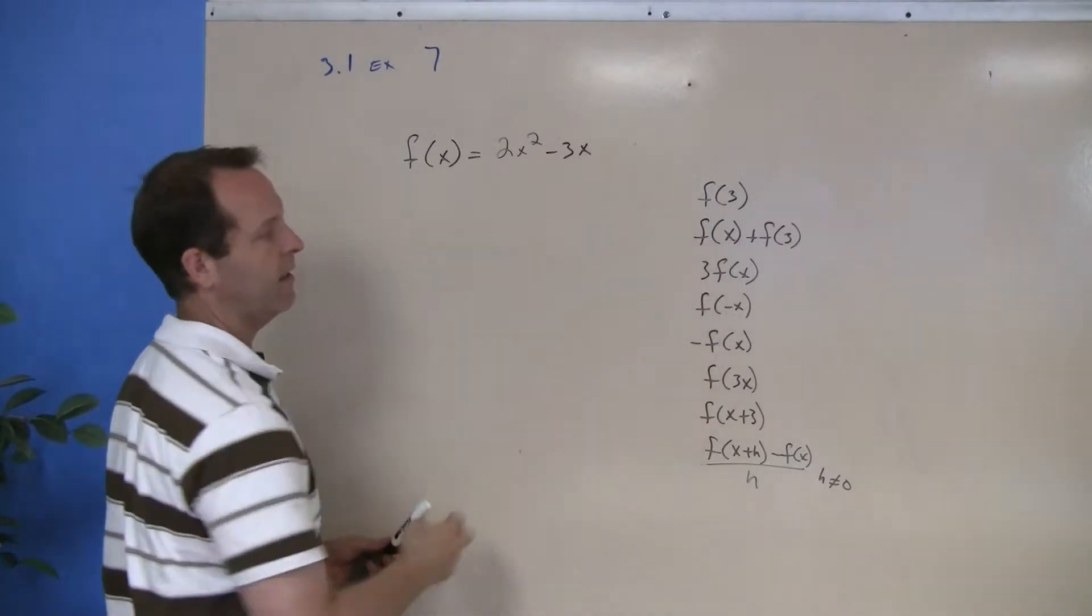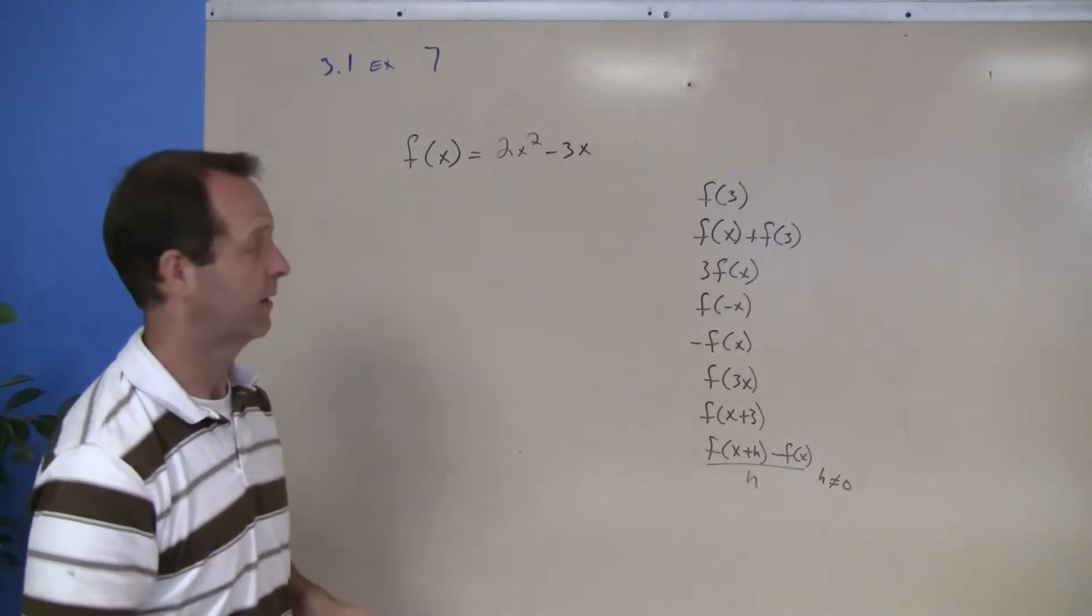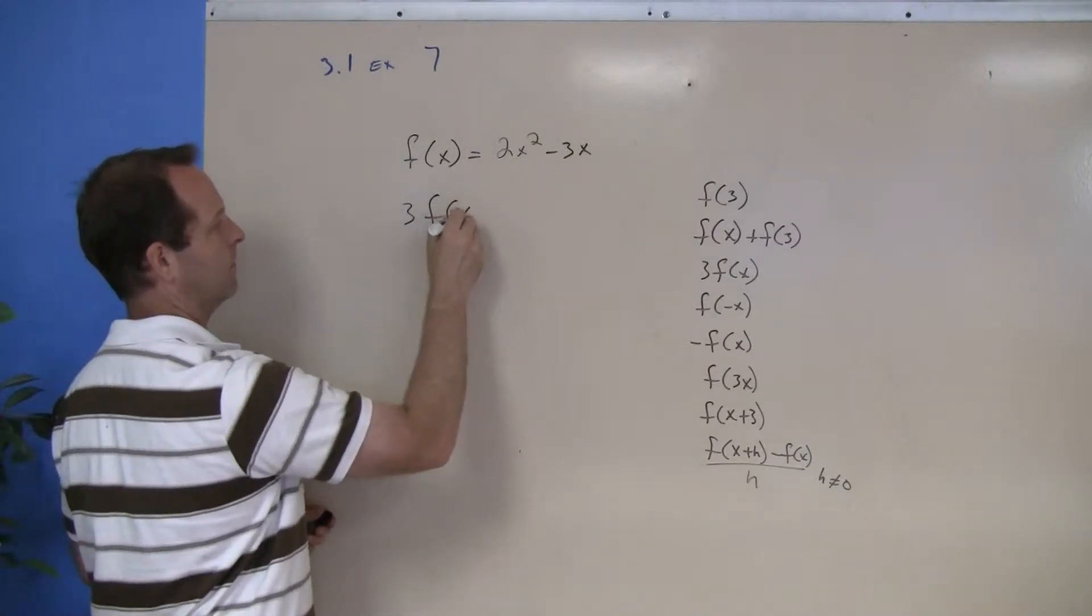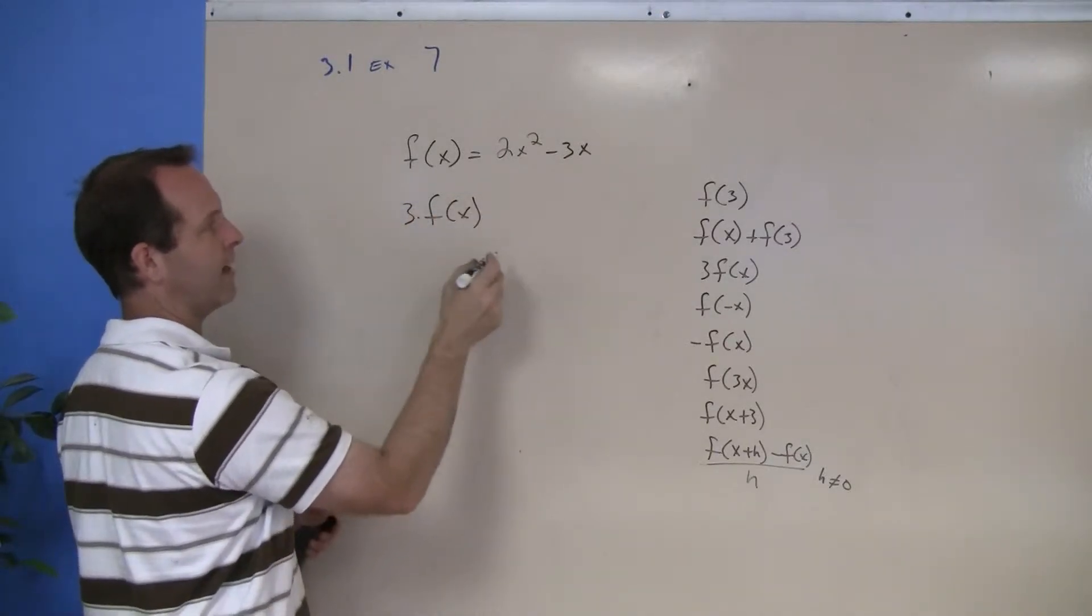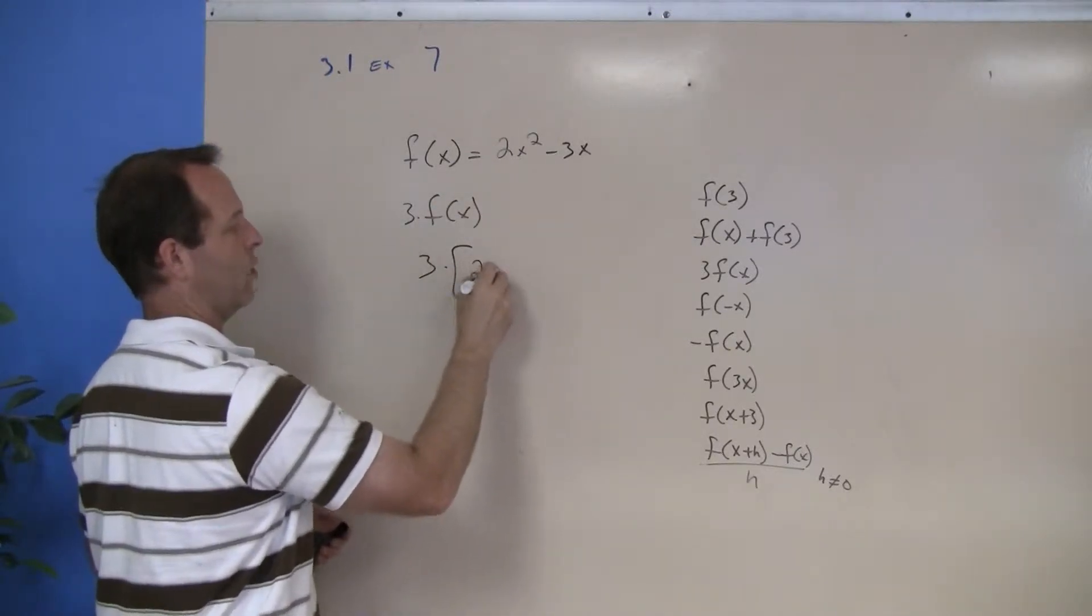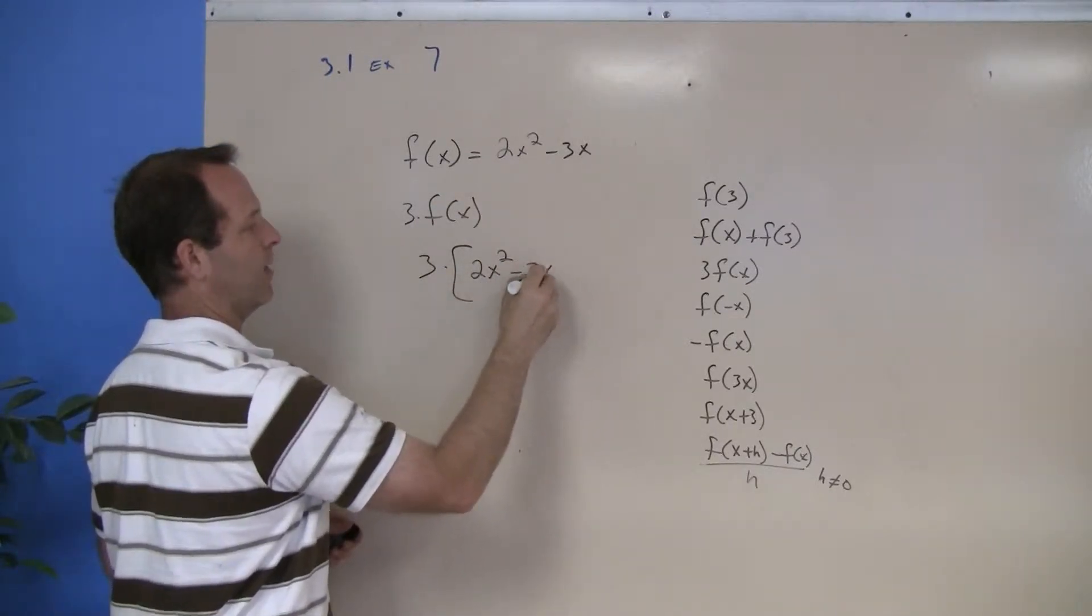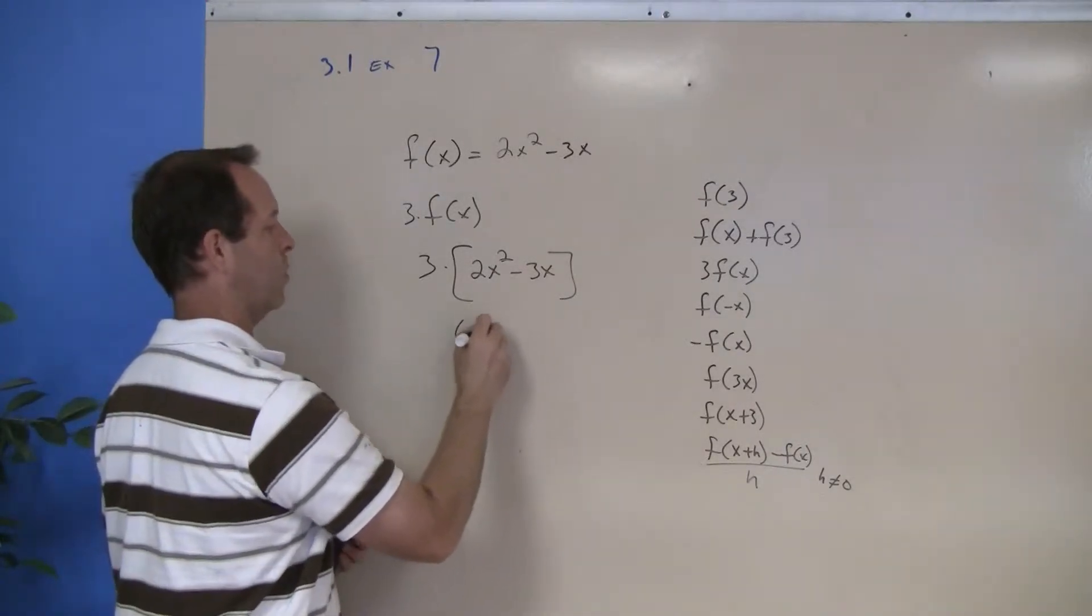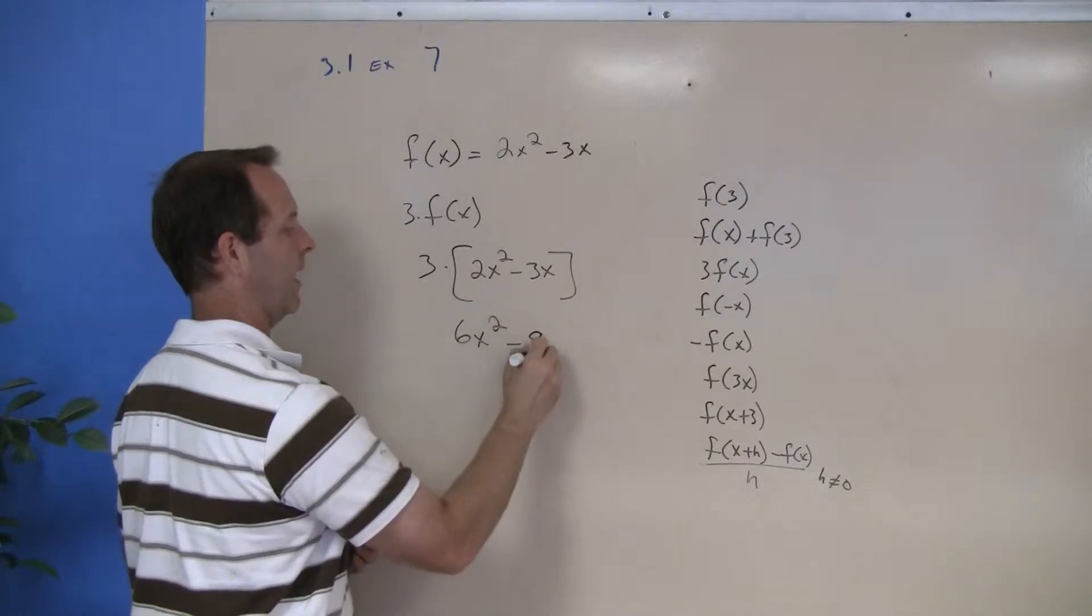The next one is saying 3 times the function f(x). I know what f(x) is, so 3 times f(x): 2x squared minus 3x. And just multiply that 3 through: 6x squared minus 9x.